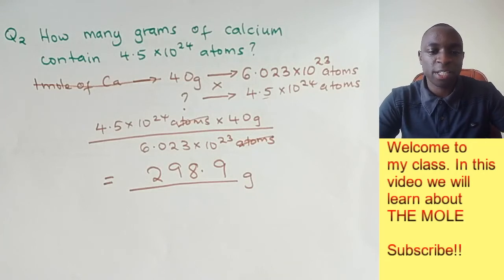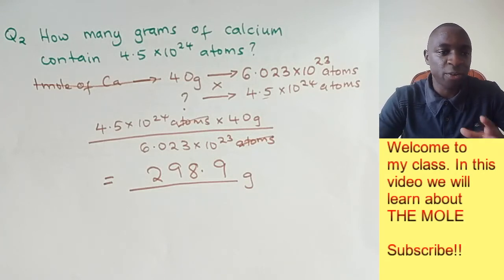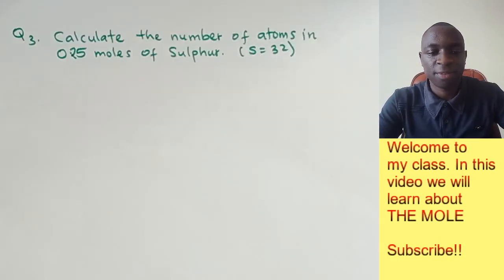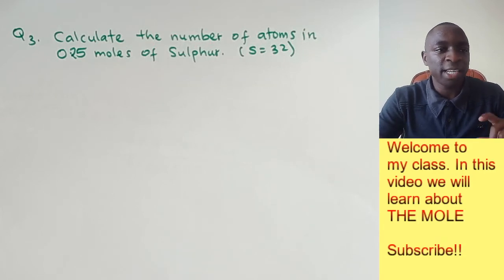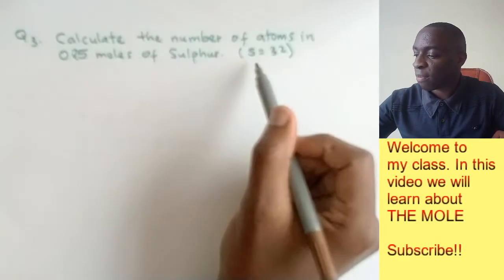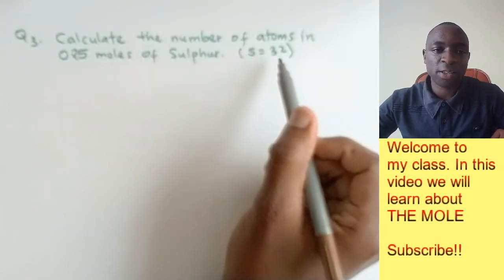For the final example showing how these are interconverted, calculate the number of atoms in 0.25 moles of sulfur. We've been given the relative atomic mass of sulfur.